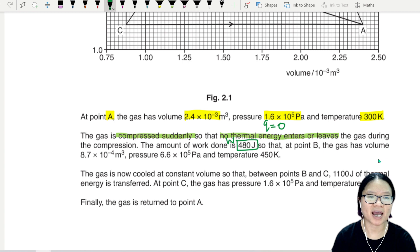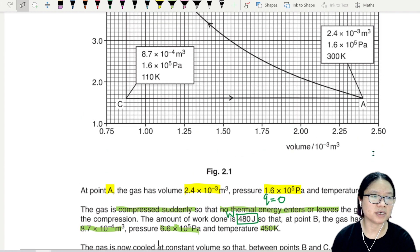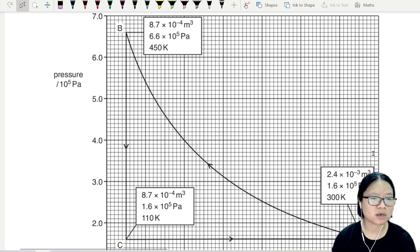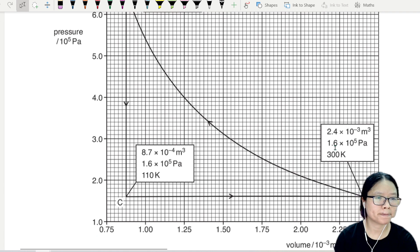The amount of work done is 480 joules, so that at point B the gas has a volume of this much, pressure of this much, and a temperature of that much. So this is B. From A to B, let me look at here, A to B, this point of the graph.